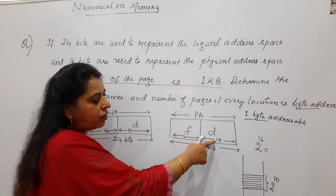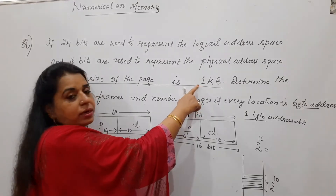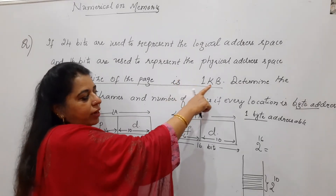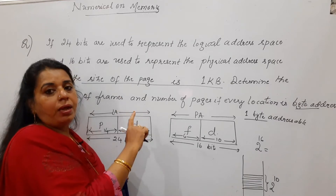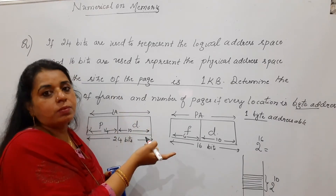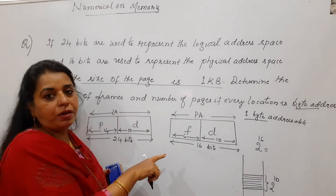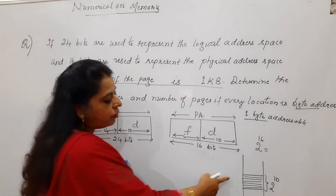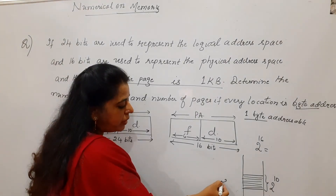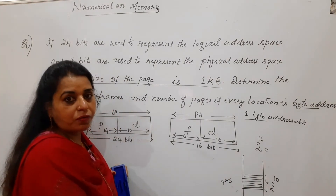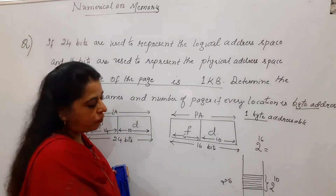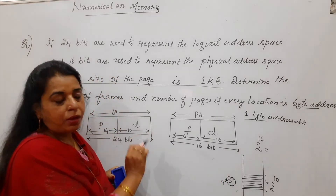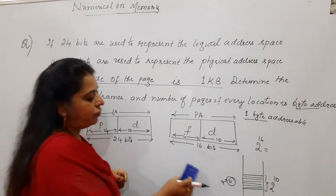You arrived at 14 and 6 by finding out how many bits represent the displacement or offset. You get that value from the size of the page given in the problem — 1 KB. Since each location is byte addressable, there are 1024 locations. Writing 1024 as a power of 2 gives 2 to the power of 10, meaning 10 bits are used to represent the displacement.